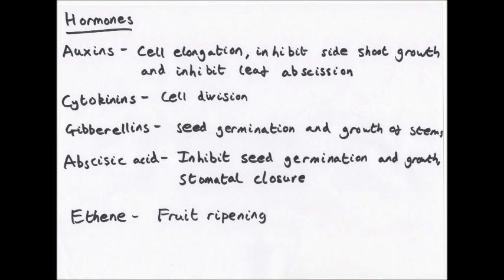Gibberellins account for seed germination and growth of stems. You don't want seeds germinating straight away — you want the right conditions: moisture, nutrients, and a good amount of sunlight. Abscisic acid inhibits seed germination, so it's present before gibberellins to make sure seeds don't germinate too early. Abscisic acid also ensures that stomata close when the plant is stressed. Xerophytic plants will have their stomata closed regularly due to lack of water, because they need to avoid losing water by transpiration — and abscisic acid is the hormone that does this.